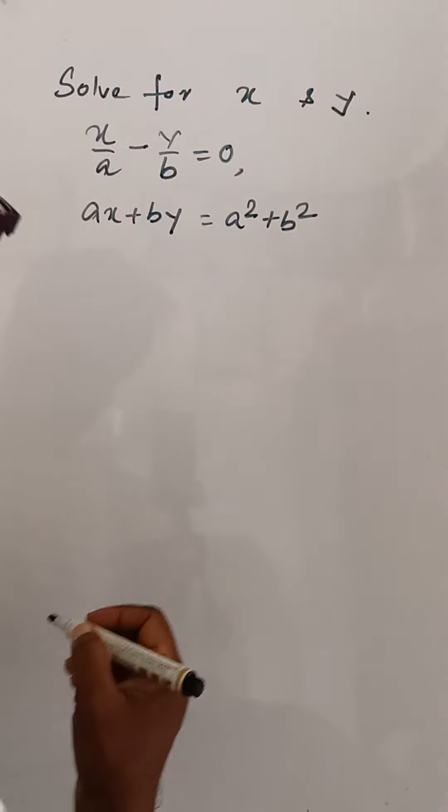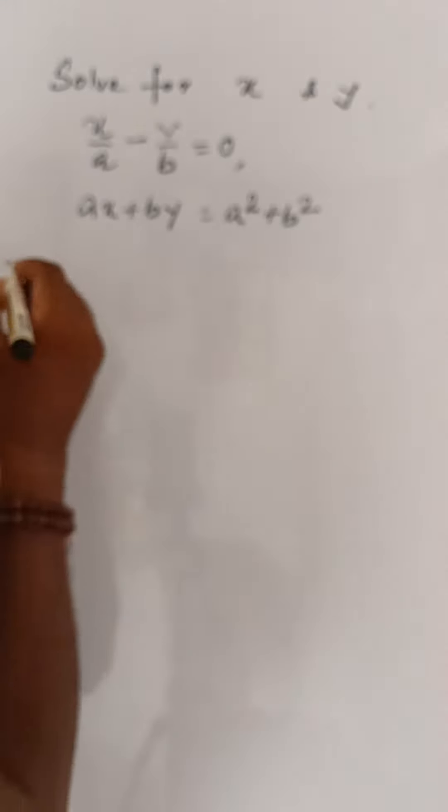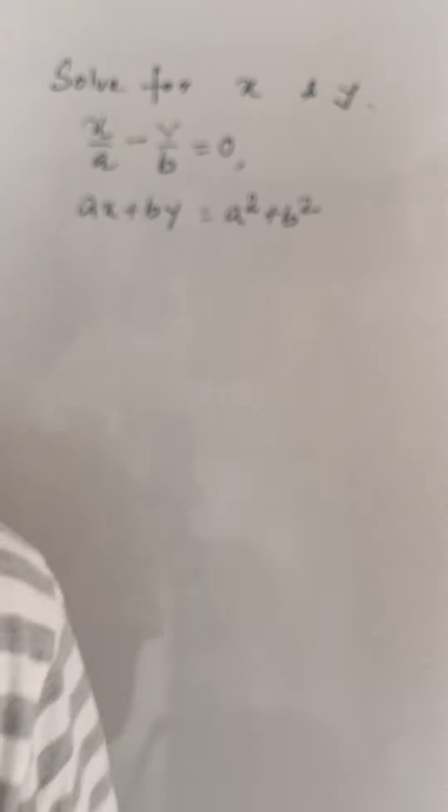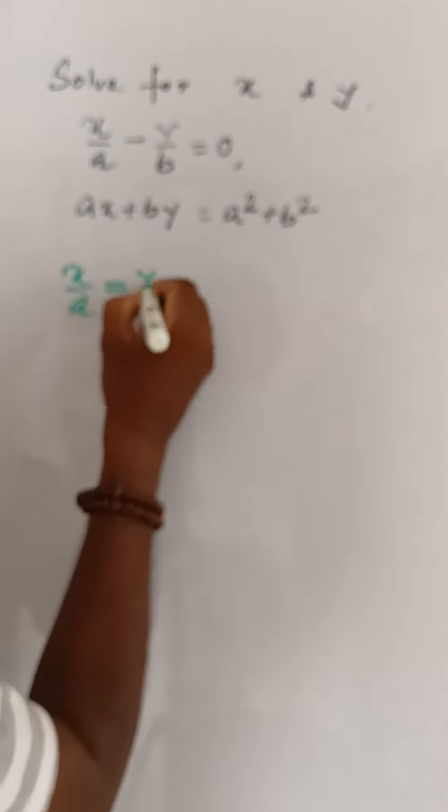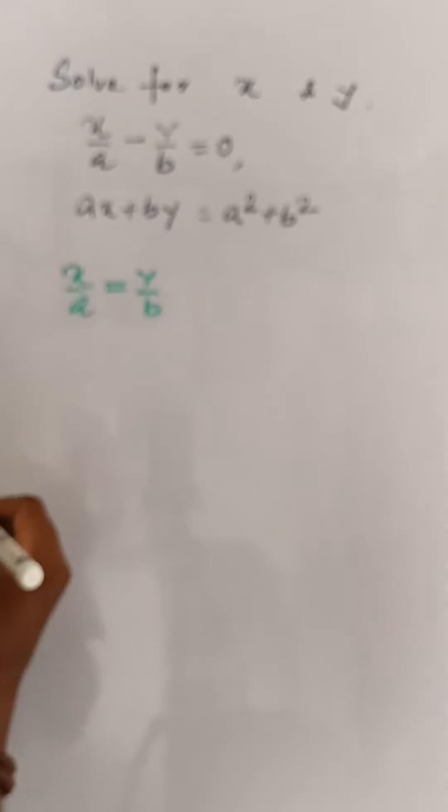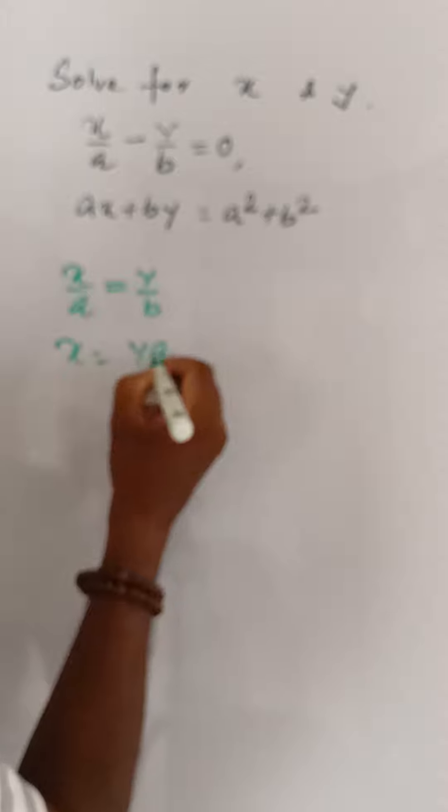These are simultaneous linear equations in two variables. We need to find the x and y values. From equation 1, we can write x/a = y/b. That means x = ya/b.